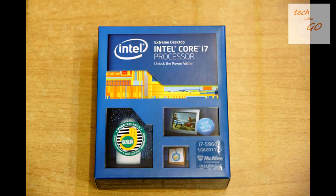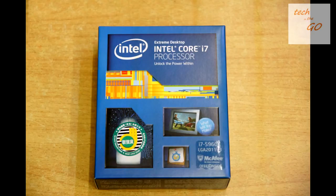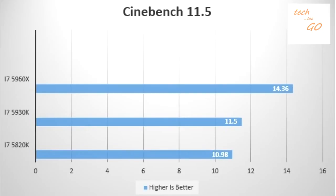Now the hero of today's topic: the i7-5960X, which is an 8-core beast. It has a total of 20 megabytes of cache. It is also Hyper-Threaded, so it has a total of 16 threads, which is good enough for nowadays. It also supports 64 GB of memory with the same conditions as the other two, and supports 40 PCIe lanes.